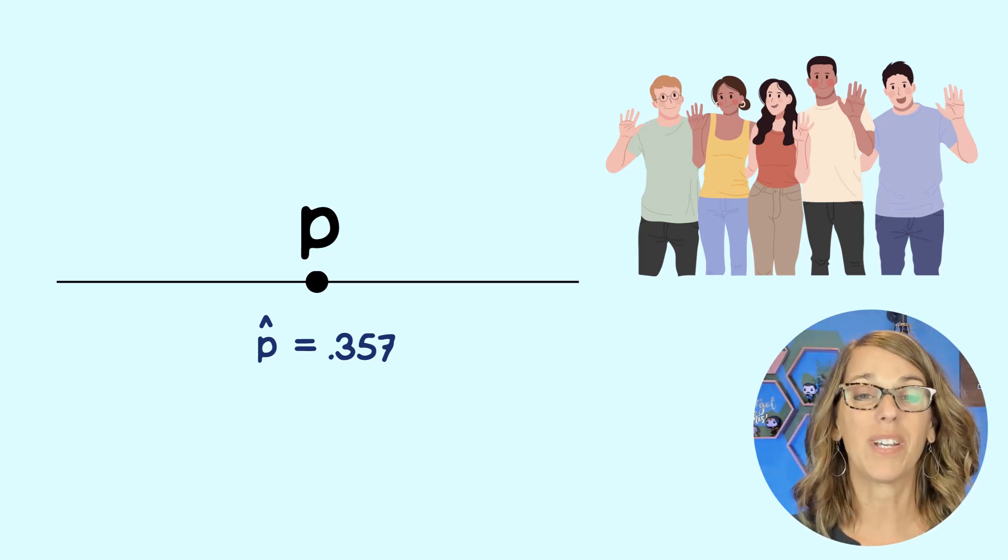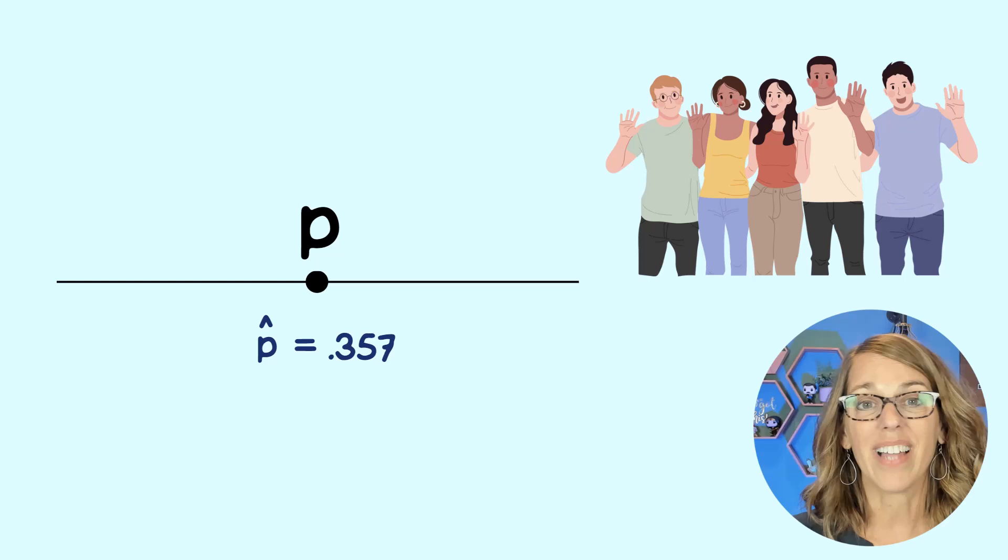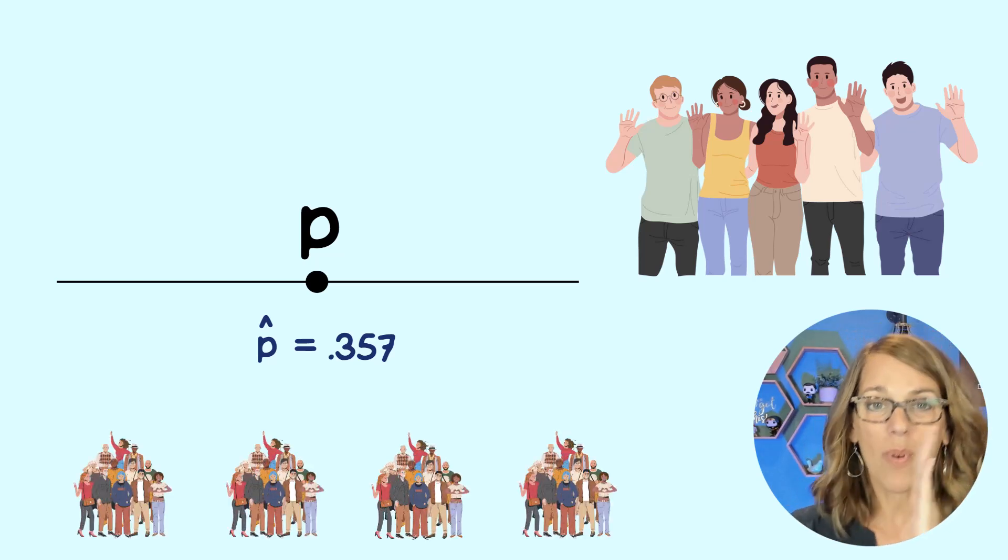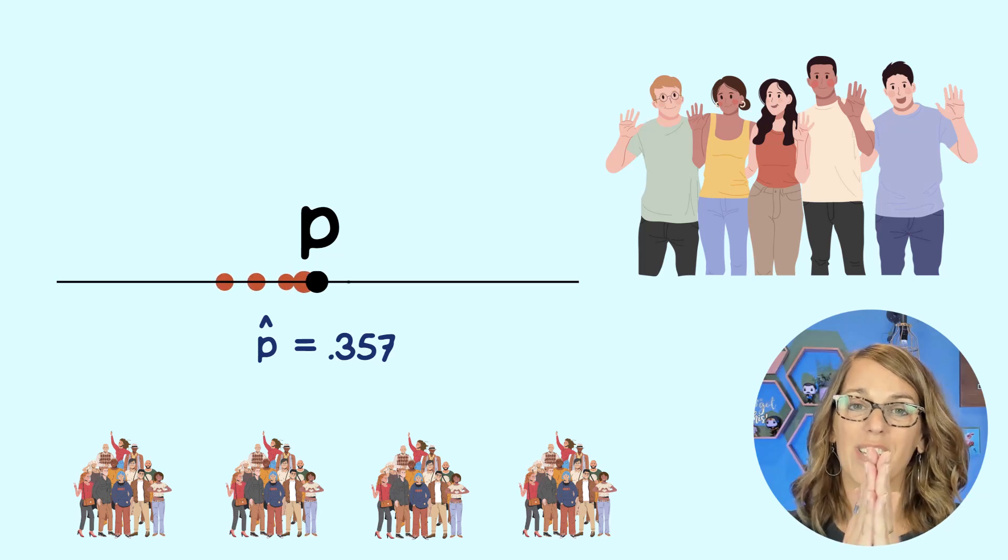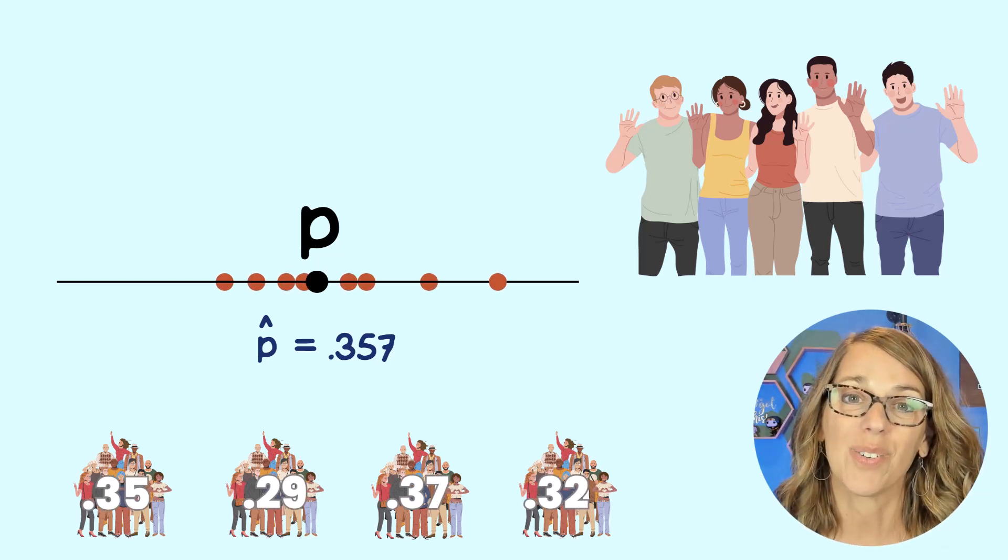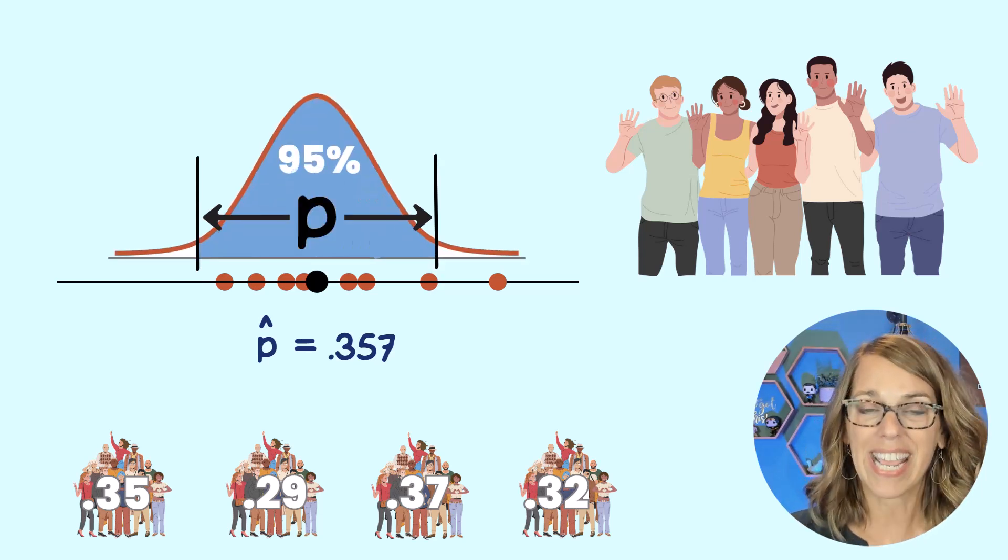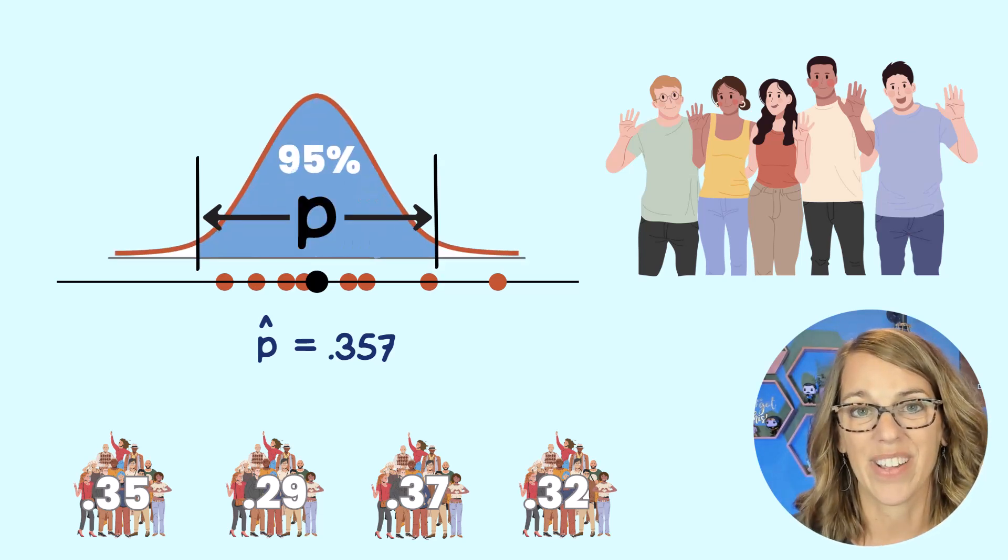So that was just for our sample. We could have gone out and sampled lots of different groups of 56 students. So this point estimate isn't enough. We're going to stretch that out into an interval and we want this interval to cover a 95% area.